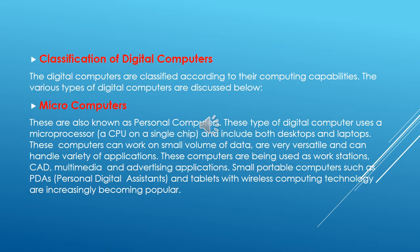Now let's discuss the classification of digital computers. Digital computers are of four types: microcomputers, mini computers, mainframe computers, and supercomputers. Microcomputers are known as personal computers — the ones we use today, like desktops, laptops, and PDAs. The key feature of microcomputers is that they use a single CPU. These computers can work on small volumes of data, but they are versatile and can handle a variety of applications.